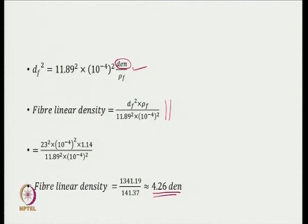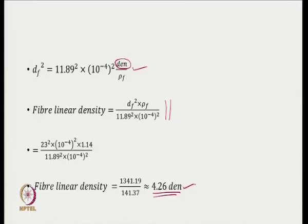We have to make use of relationships developed by different authors; sometimes they may not be readily available in textbooks and we may have to consult research papers. So at least we get an estimation of 4.26 — that is the linear density of the fiber that we have to choose.